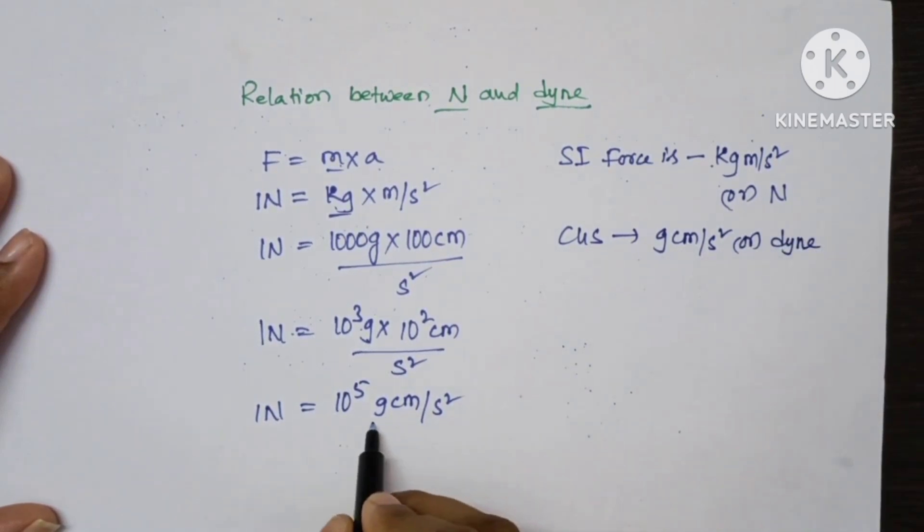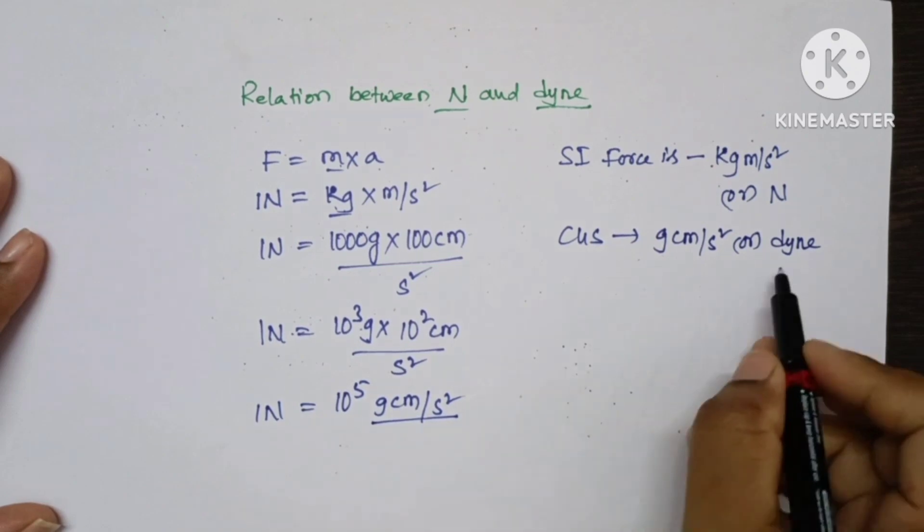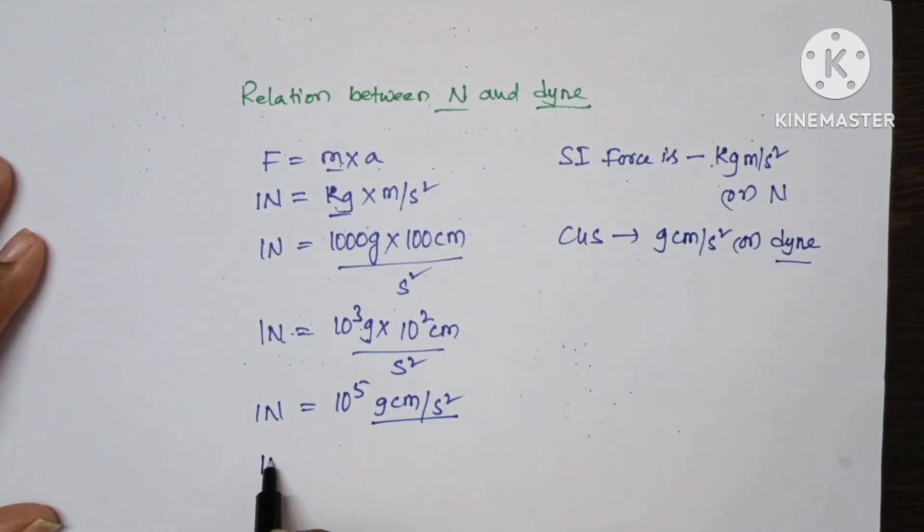So here in the place of gram centimeter per second square we can write it as Dyne. So 1 Newton is equal to 10 to the power of 5 Dyne. This is the relation between Newton and Dyne: 1 Newton equal to 10 to the power of 5 Dyne.